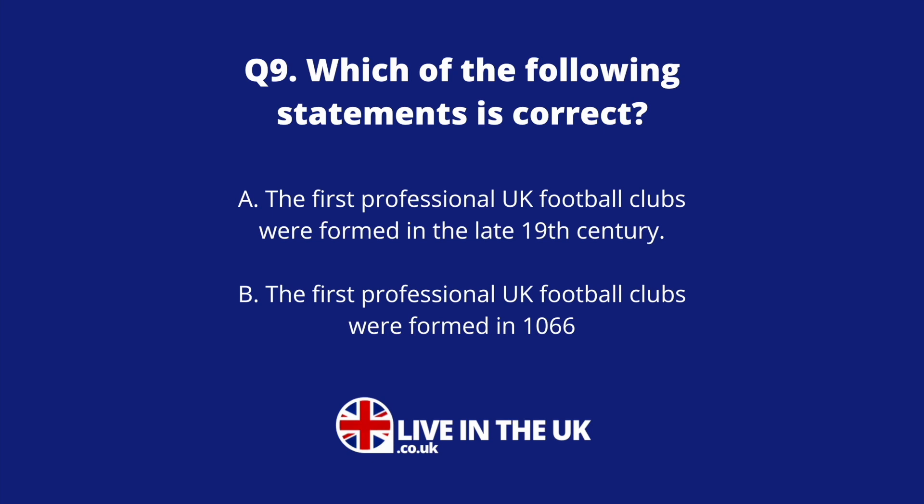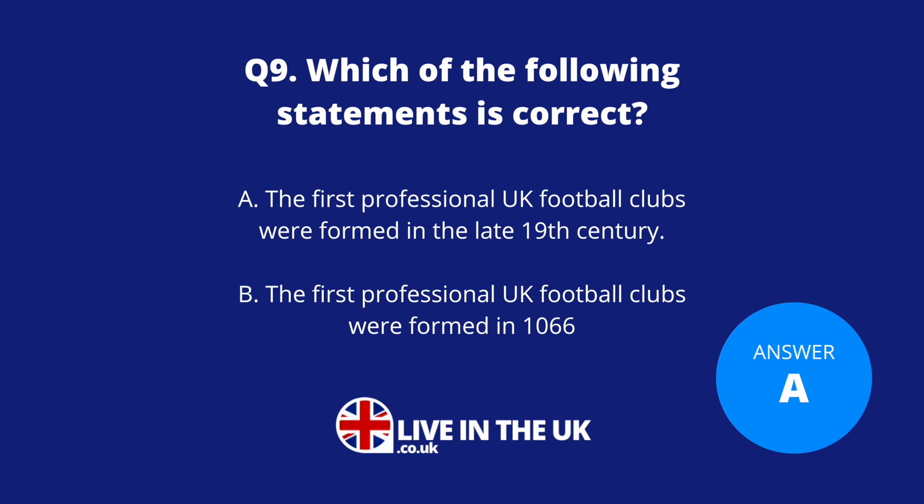Question nine: Which of the following statements is correct? A. The first professional UK football clubs were formed in the late 19th century. Or B. The first professional UK football clubs were formed in 1066? The answer is A — the first professional football clubs were formed in the late 19th century. The Norman invasion happened in 1066.